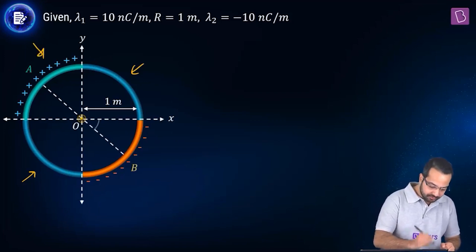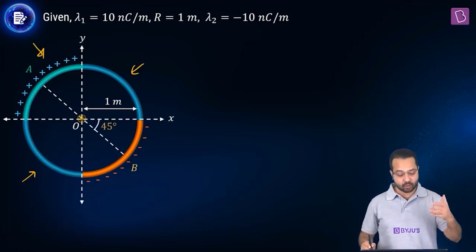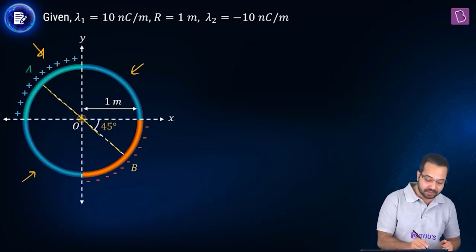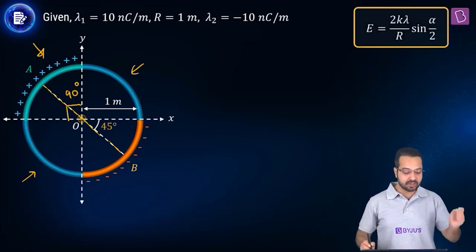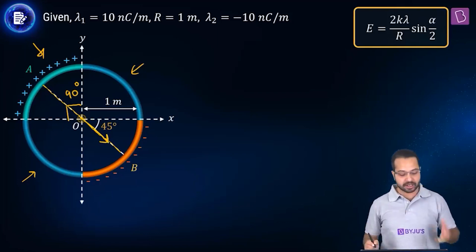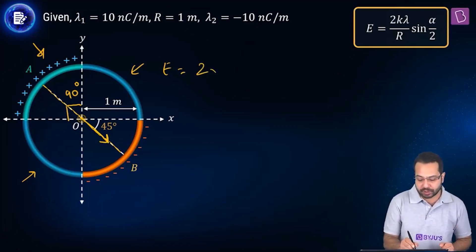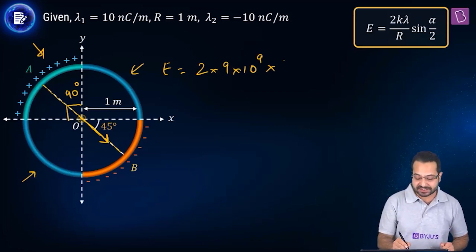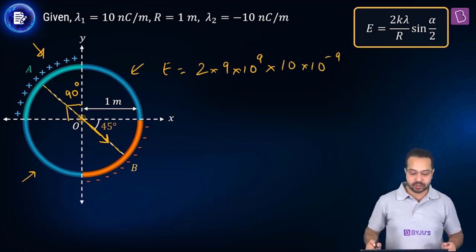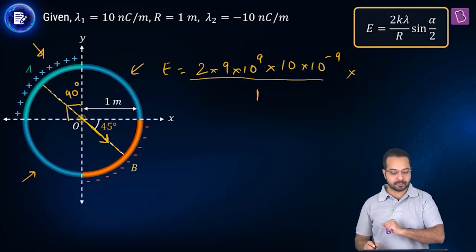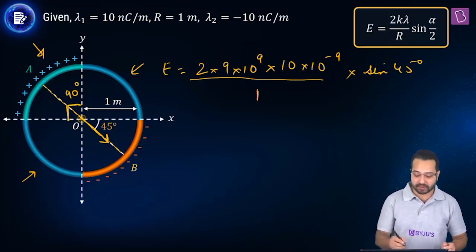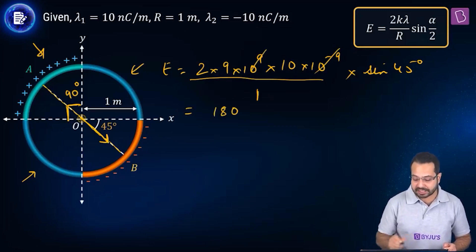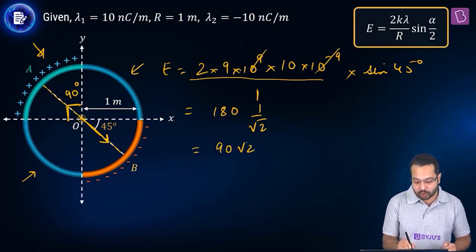For the second quadrant (positive charge), the angle bisector points at 135° and the arc subtends 90°, so α = 90° and sin(45°) = 1/√2. E = 2 × (9×10⁹) × (10×10⁻⁹) / 1 × (1/√2) = 180/√2 = 90√2 N/C.